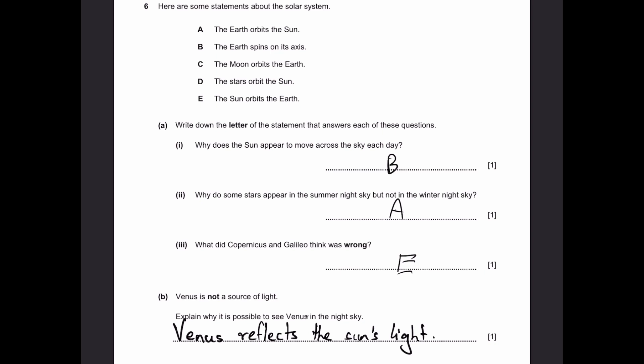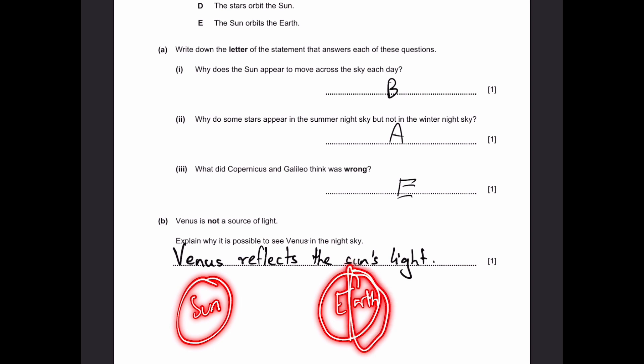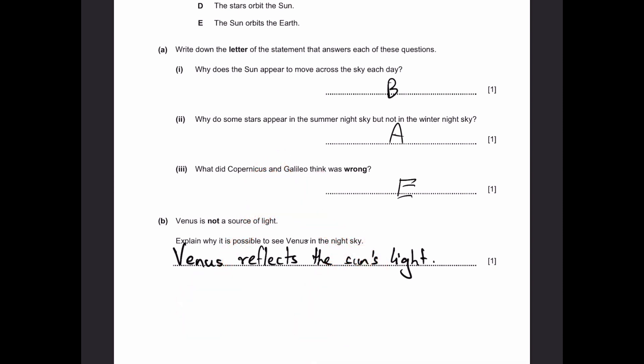Part B. Venus is not a source of light. Explain why it's possible to see Venus in the night sky. Venus reflects the sun's light. Let's say there's the sun and this is the earth. This half will be having a night sky and Venus is over here. From somewhere on earth, it's possible to see Venus because the sun's light reflects on Venus to come to earth.